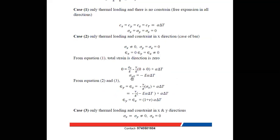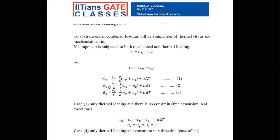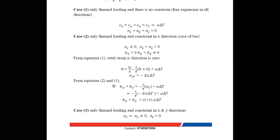Substituting sigma x into Equations 2 and 3 to find epsilon y and epsilon z: epsilon y = epsilon z = −(nu / E) · sigma x + alpha·ΔT. Since sigma x = −E·alpha·ΔT, we get: epsilon y = epsilon z = alpha·ΔT + nu·alpha·ΔT = (1 + nu)·alpha·ΔT.